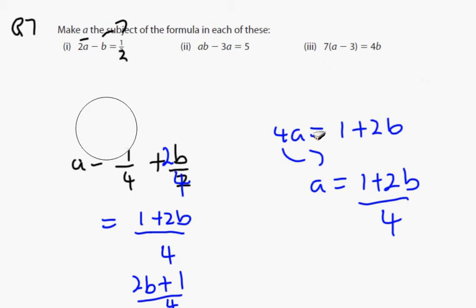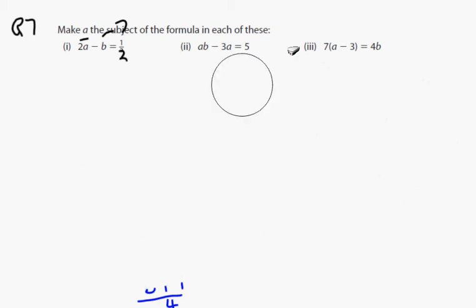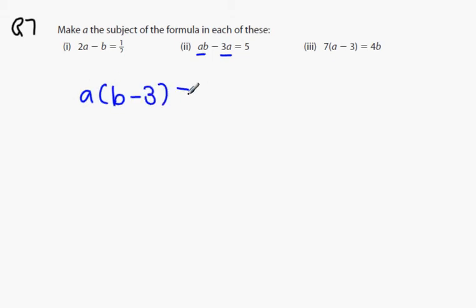Next one. Get A on its own in this question, the second one. A appears how many times? That means you're going to do what? You've got to factorize. B minus 3 equals 5. B minus 3 is being multiplied by A on the left, which means it's going to be division when it makes its way to the right. That's that one there. How many people got that one? Pretty good.